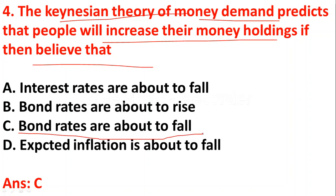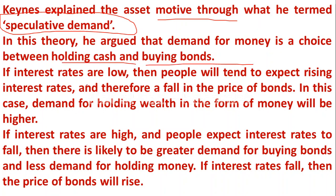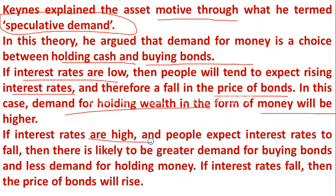According to Keynesian theory of money demand, people will increase their money holdings when bond rates are about to fall. Keynes explained the asset motive through what he termed speculative demand. Keynes argued that demand for money is a choice between holding cash and buying bonds. If interest rates are low, people expect rising interest rates in the future and therefore a fall in bond prices — in this case demand for holding wealth in the form of money will be higher, and vice versa.